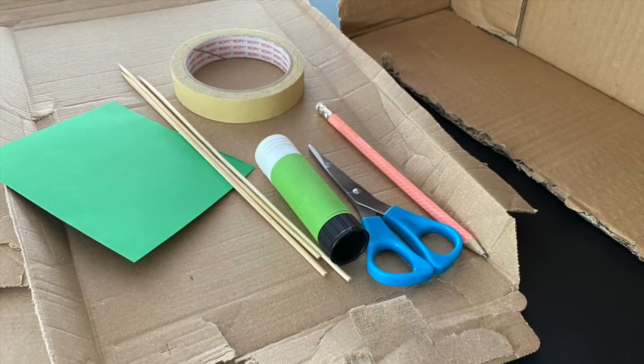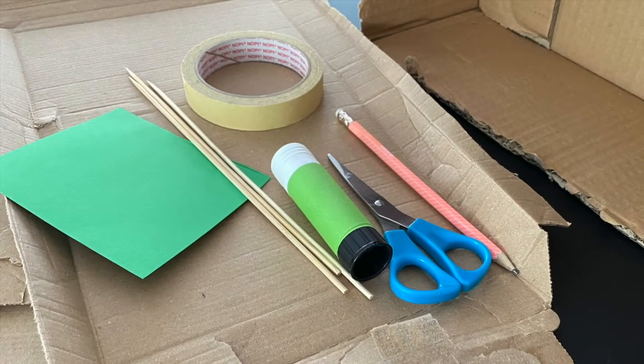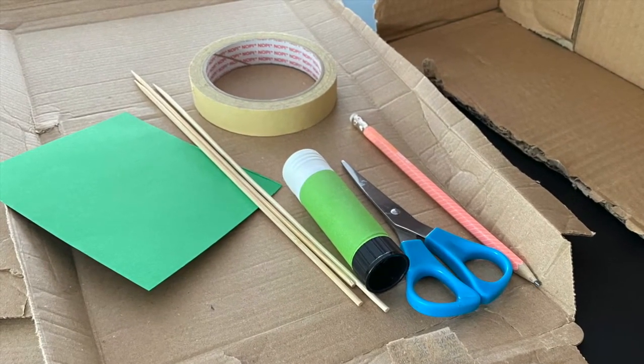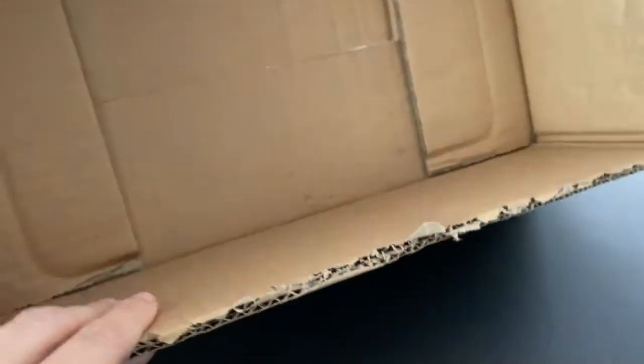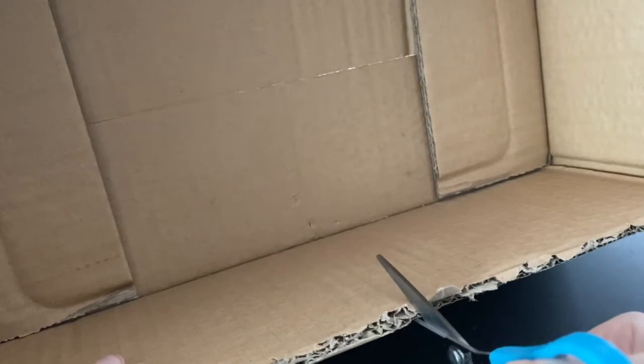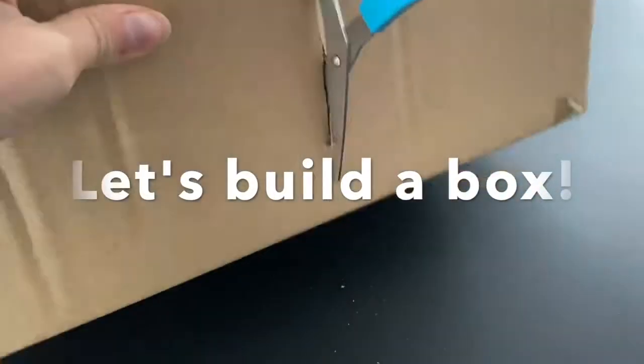To build your own automata you will need lots of cardboard, paper, scissors, glue and tape, and maybe some skewers. Remember you can always find alternatives like chopsticks or paper tubes.